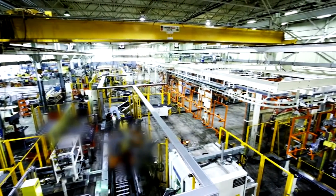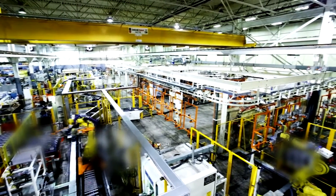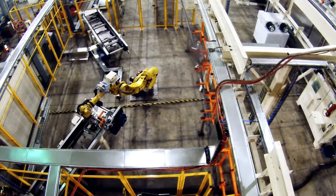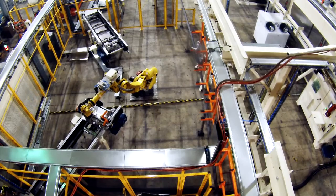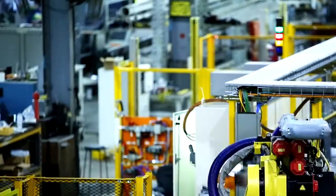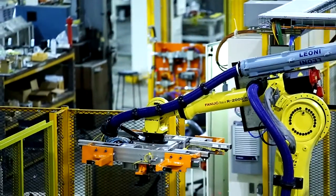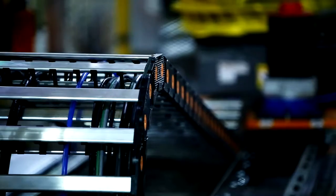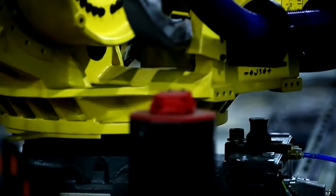This fluorescent penetration inspection cell is just one of many unique types of equipment that HMM can produce. This cell has a fully automated load and unload system utilizing five robots and two traversing robots with double end effectors.